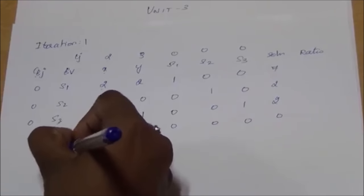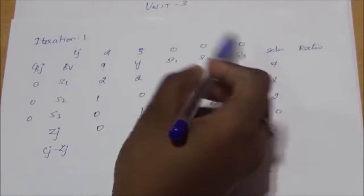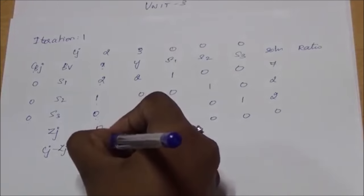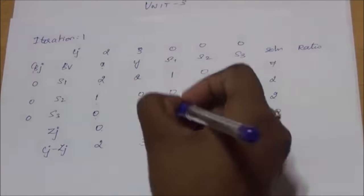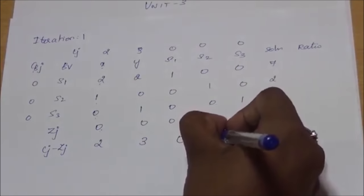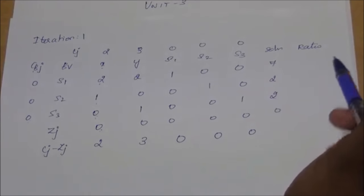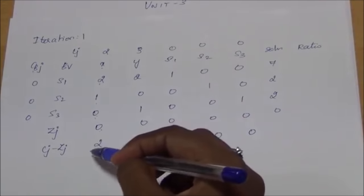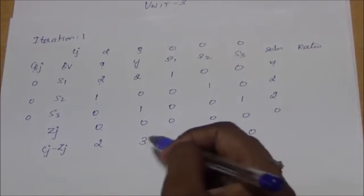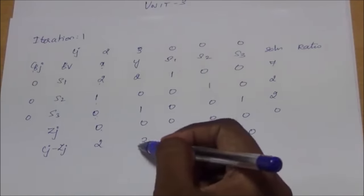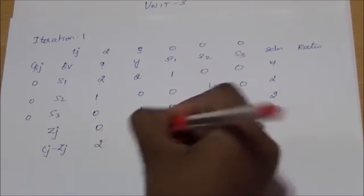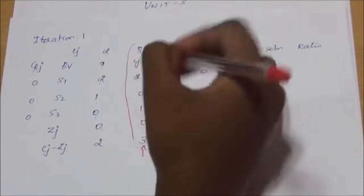For cj minus zj, we subtract: 2 − 0 = 2, 3 − 0 = 3, 0 − 0 = 0, 0 − 0 = 0, 0 − 0 = 0. For the simplex method we find the pivot row and pivot column. Since the problem is maximization, we take the maximum value in cj − zj, which is 3, so this is the corresponding pivot column.